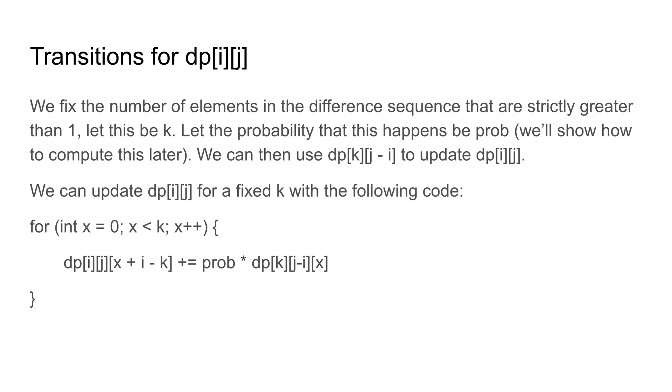And it's j minus i because each element is already at least one. So we're subtracting one for each of those originally. So we can use these answers to update dp[i][j].